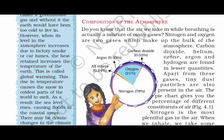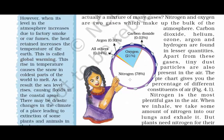Now let's read about the composition of the atmosphere. If you see this pie diagram, you can see nitrogen takes it over by 78% and oxygen takes it over by 21%. These two are the major gases which make up the bulk of the atmosphere. The other gases are carbon dioxide, helium, ozone, argon, and hydrogen, but they are found in lesser quantities.